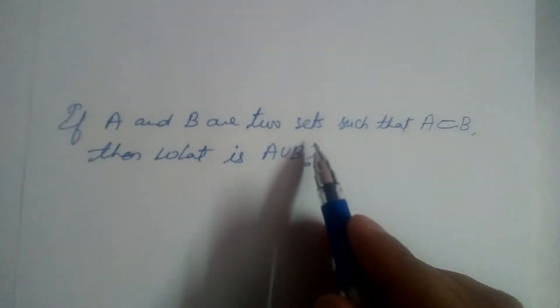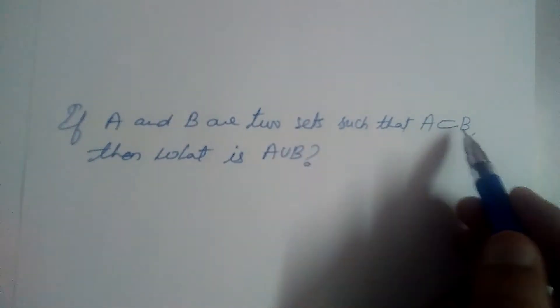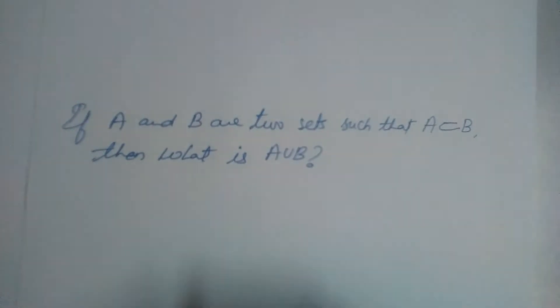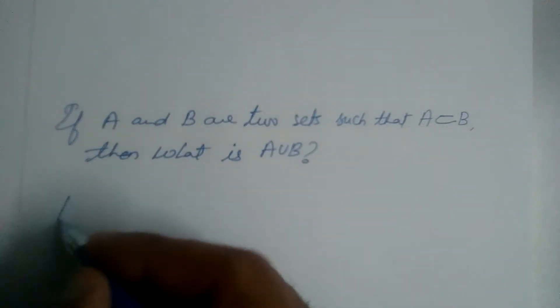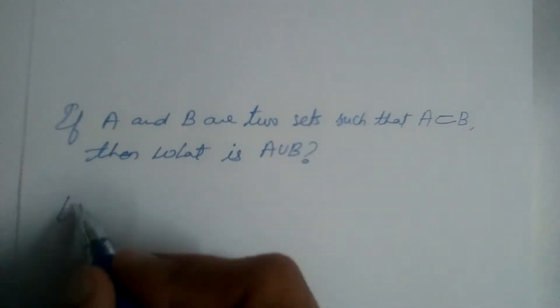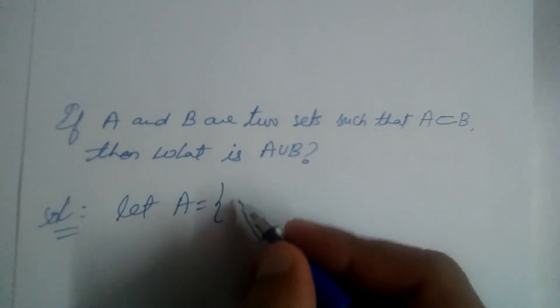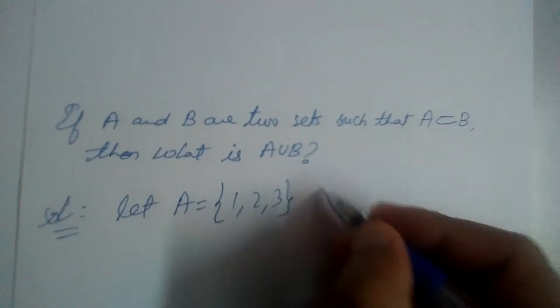If A and B are two sets such that A is a subset of B, then what is A union B? Let's take examples and prove this. Let A equal {1, 2, 3} and...